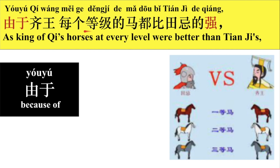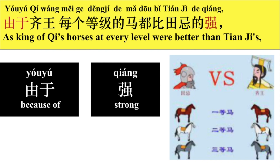由于骑王每个等级的马都比田纪的强，强就是好的意思。好，我们来看一下这个照片。这个是田纪，这个是骑王，这些是田纪的马，这些是骑王的马。那么这个是一等马，一等马对一等马；这个是二等马，就是中等马对中等马；那么第三等呢就是下等，下等马对下等马。但是骑王的马每个等级都比田纪的马好，强。